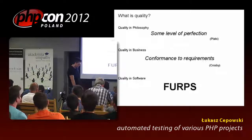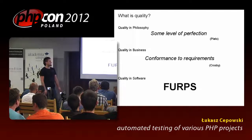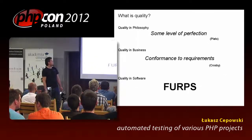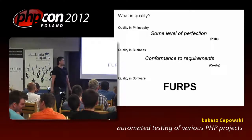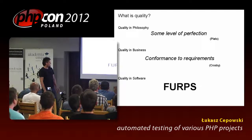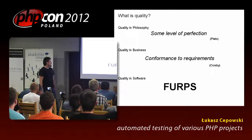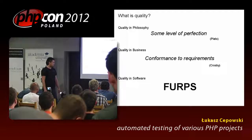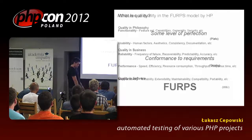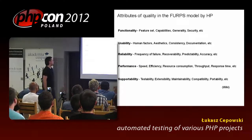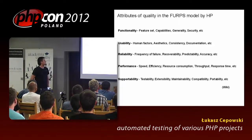Defining quality is pretty hard because it's a very subjective topic. In philosophy, as Wikipedia says, quality is some level of perfection — those are Plato's words. Quality in business is the conformance to requirements: meet the requirements, do as the specification says. In software, there is a model of quality named FURPS, introduced by Hewlett-Packard. FURPS stands for Functionality, Usability, Reliability, Performance, and Supportability — those are the attributes of quality, and they are mostly measurable.